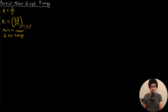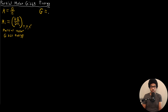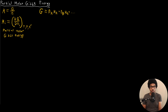Similar to how we calculated the total volume in the previous video by taking each component in our mixture and multiplying the number of moles by the molar volume, we're going to do the analogous thing here to get the total Gibbs energy. The total Gibbs energy is just the number of moles of component A times the chemical potential of A, plus the number of moles of component B times the chemical potential of B, and so on — a sum of moles times chemical potential for each component.